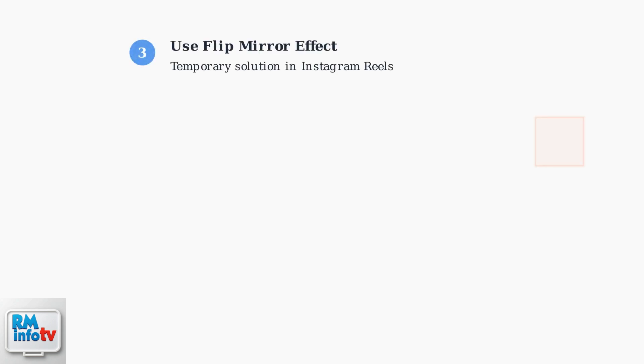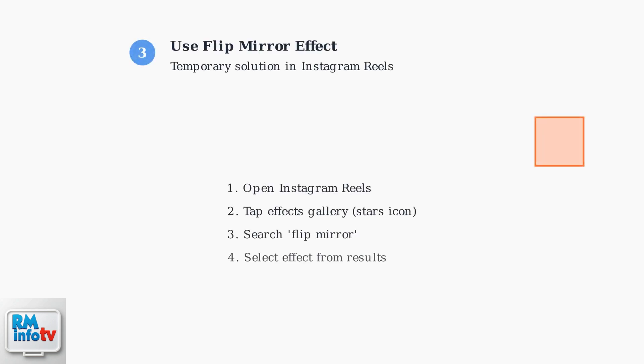For a temporary workaround, use the flip mirror effect in Instagram Reels. While not a permanent fix for video calls, this effect can help display your image correctly during recording and may provide insight into the camera orientation issue.